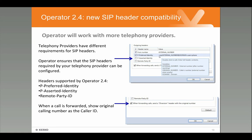There's also a setting called the diversion header. If you send the diversion header along with the call, it means that when possible, we can show the original calling number when transferring a call. So for example, if a call comes in for me and I want to transfer it to Marino, when that call is forwarded, the person receiving the call will see that it came from the original caller rather than from myself.